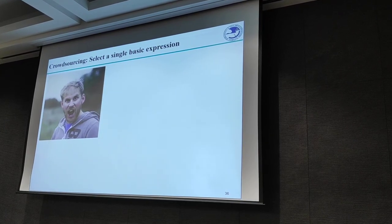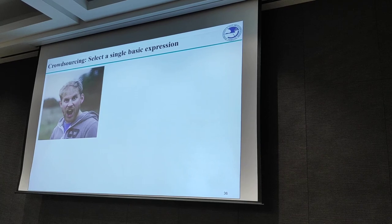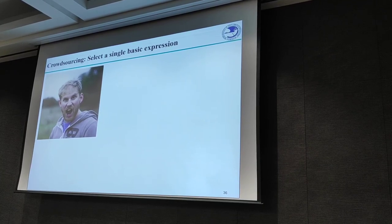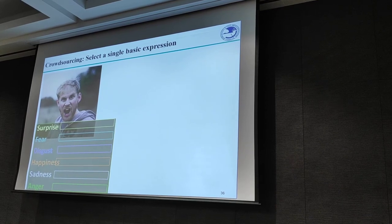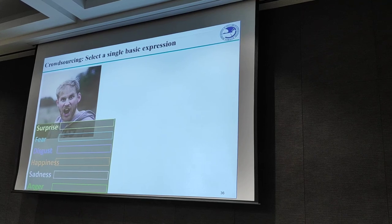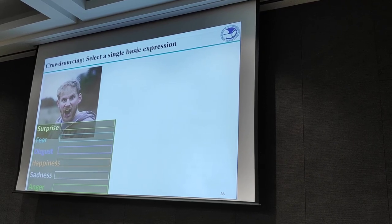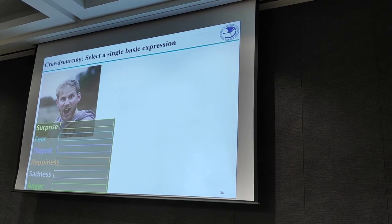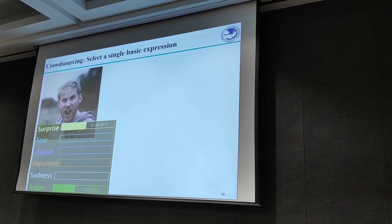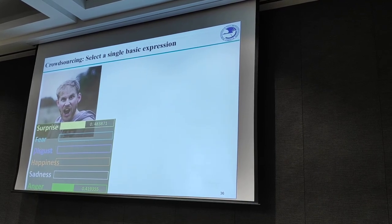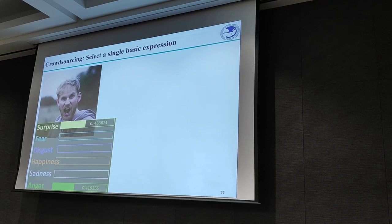Since understanding emotion is mainly subjective, how to accurately label facial expressions remains an open problem. Let me show some examples from our expression image database. Which expression label do you select — surprise, fear, disgust, happiness, sadness, or anger? About 48% of people selected 'surprise' and 41% selected 'anger' for the same image. Different people give different results. We call this a compound emotion.